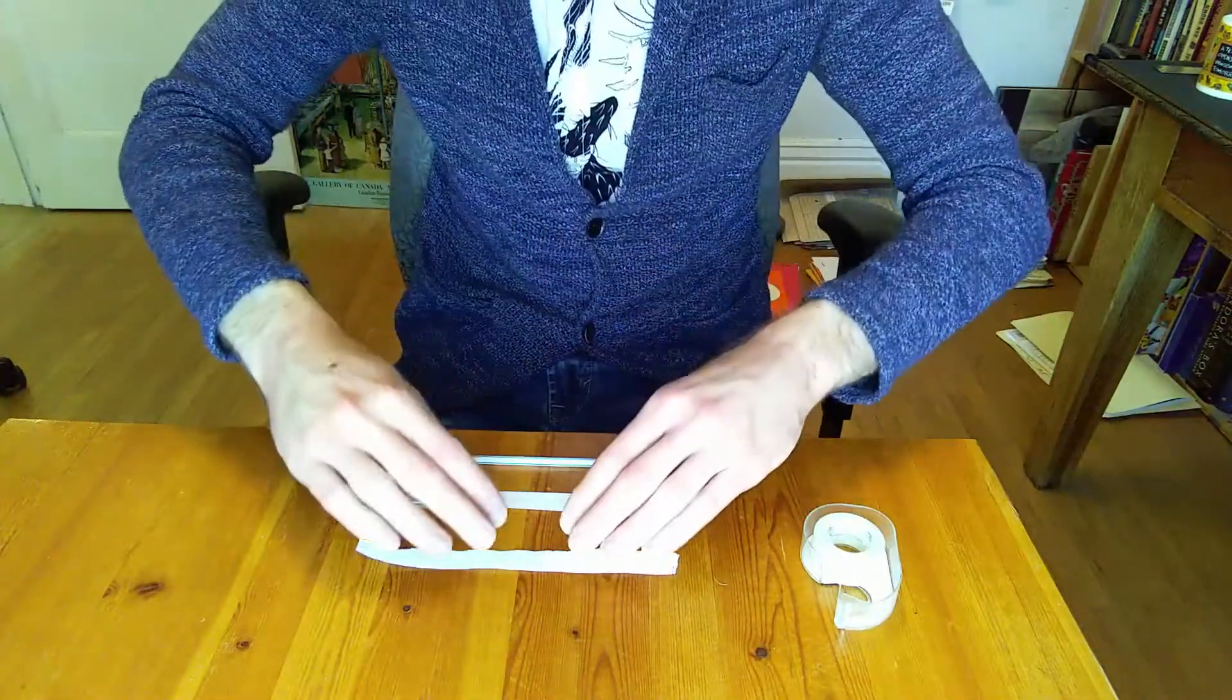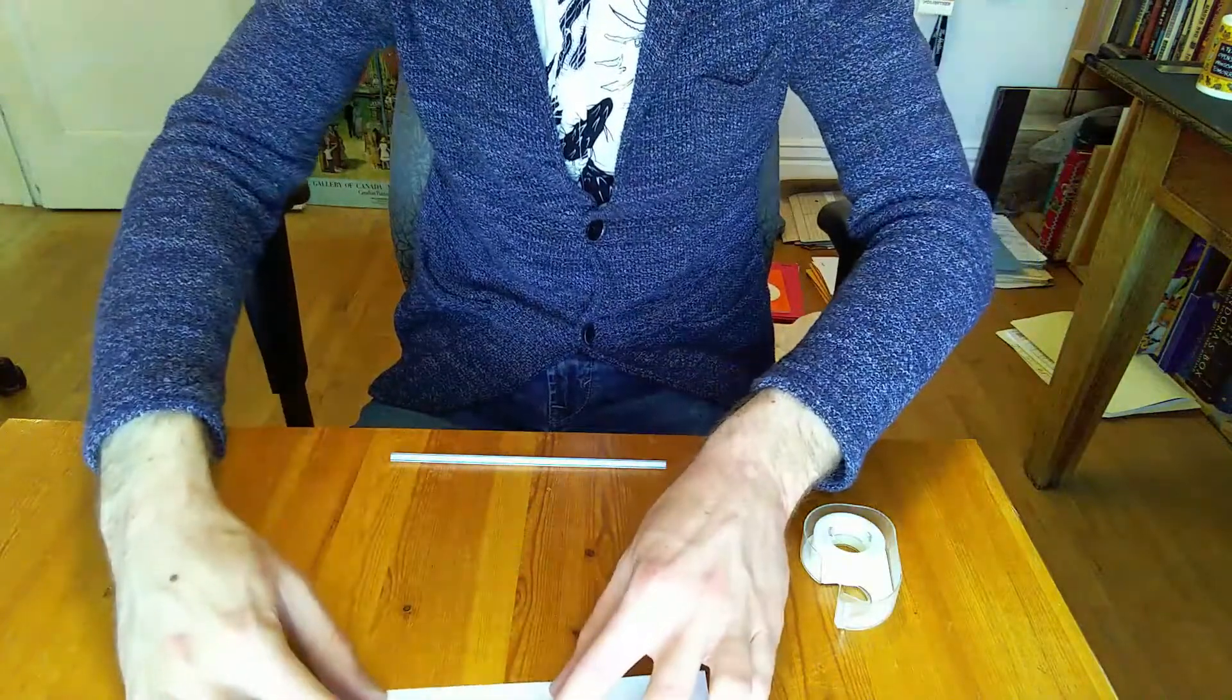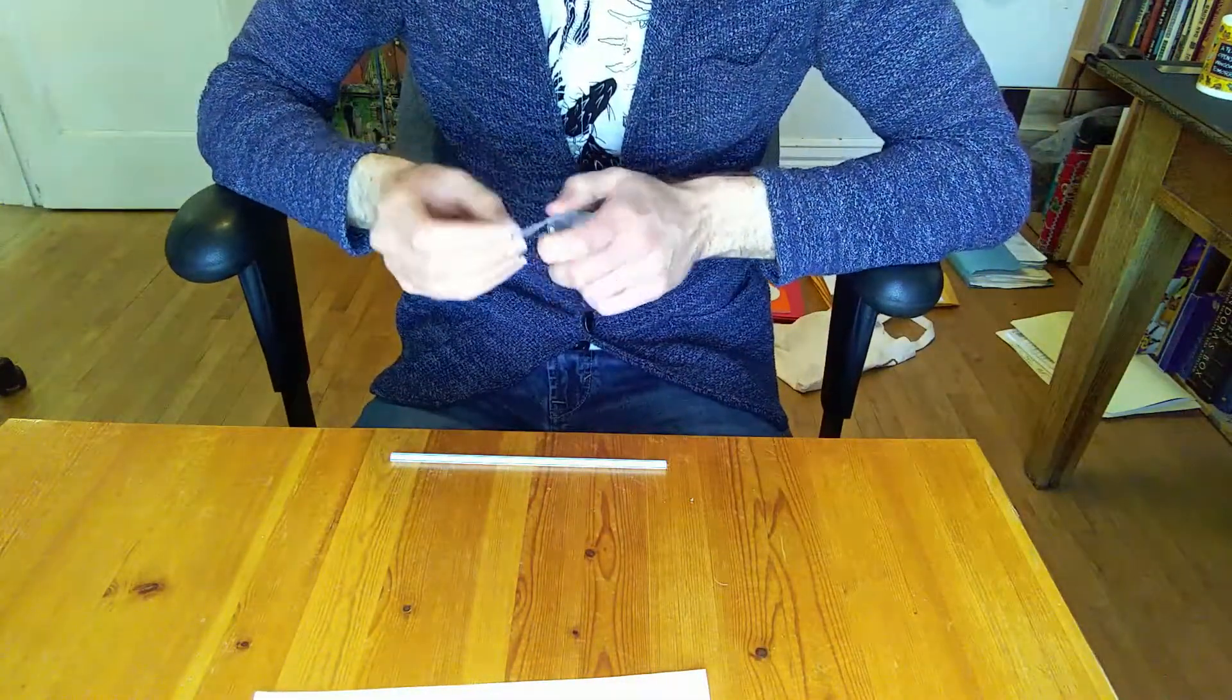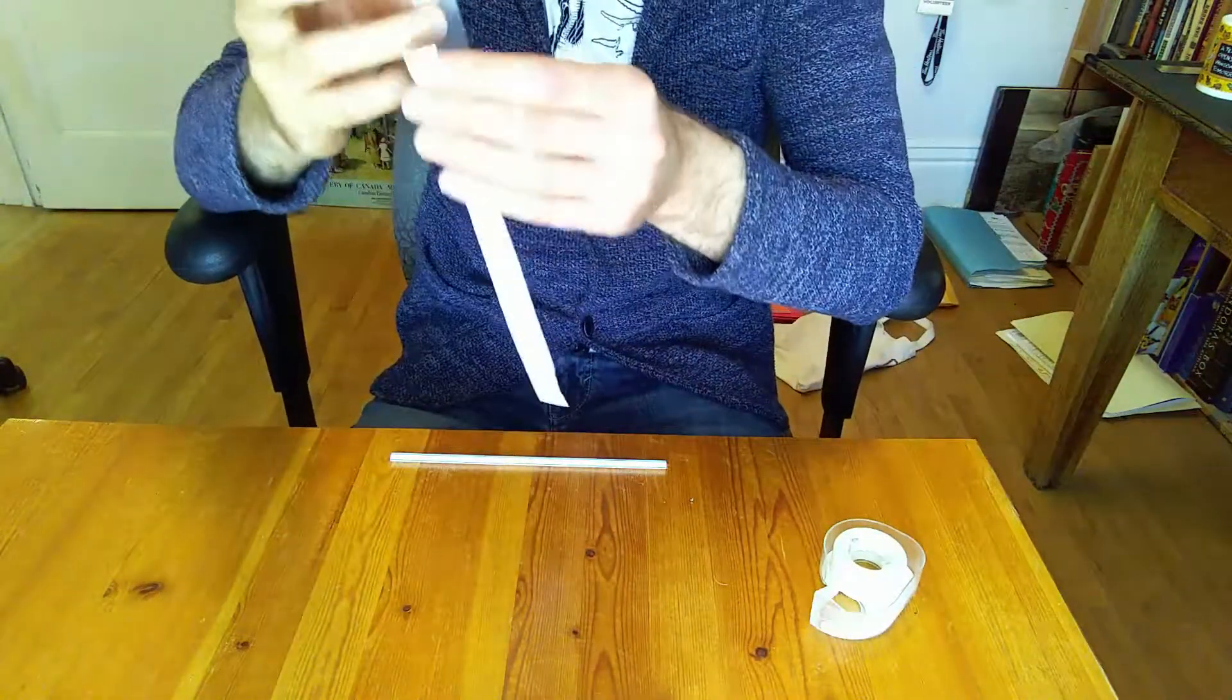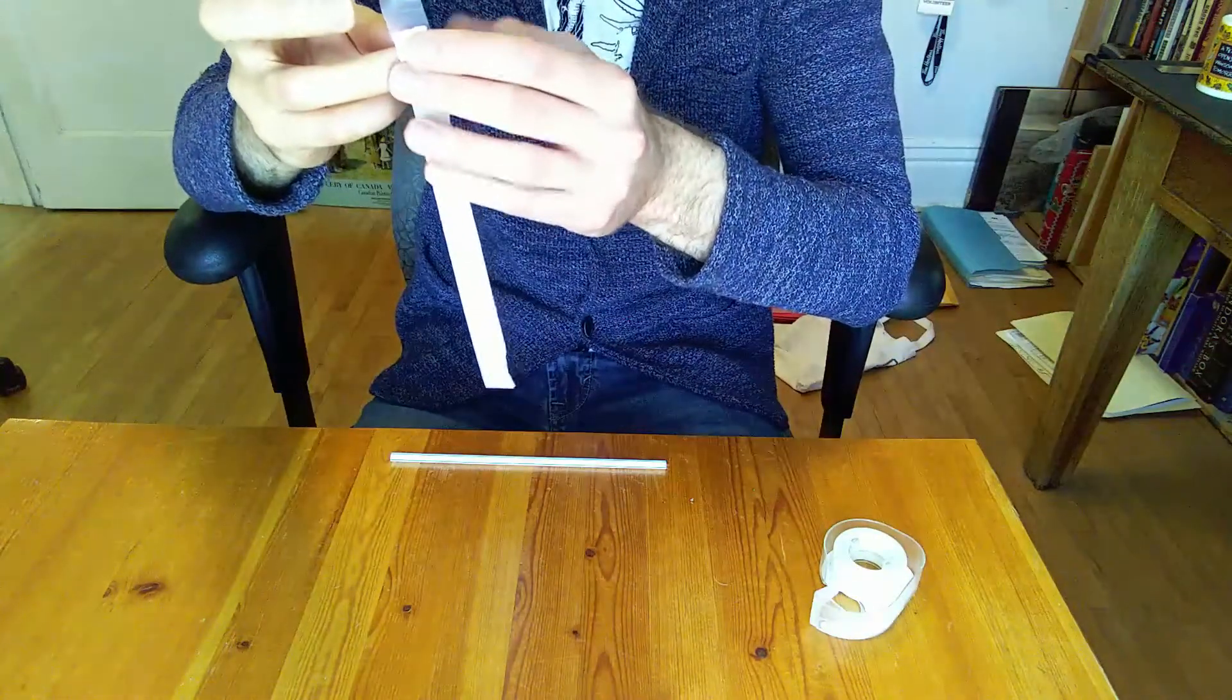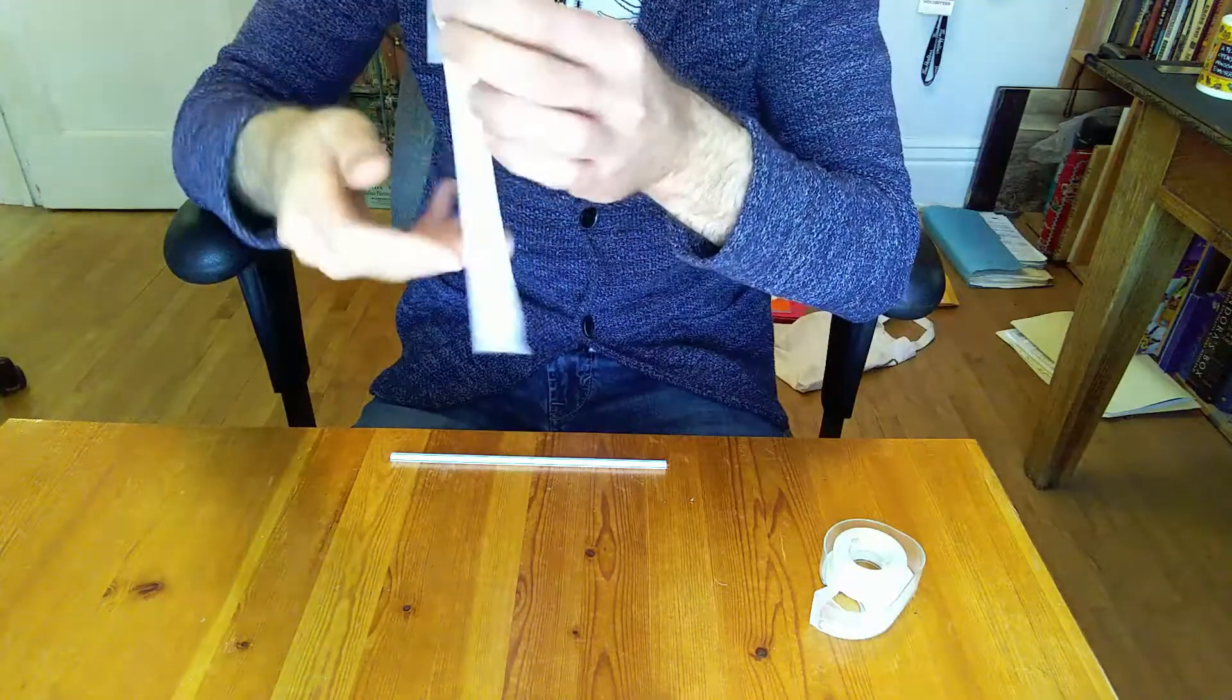The next thing that you're going to need to do is attach the strips of paper to each other and to the straw. So I'm going to take this piece of tape. And I'm going to turn these pieces of paper into hoops. Best as I can.